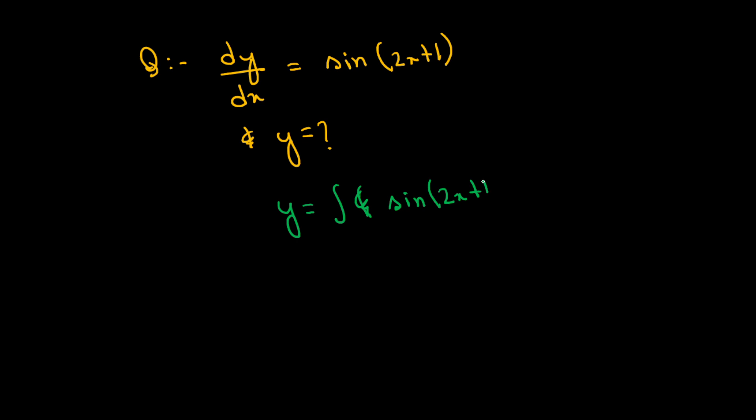Integrating sin(2x+1) gives negative cos(2x+1) divided by the x coefficient which is 2, plus c.